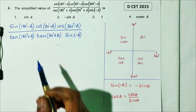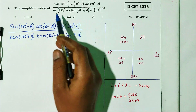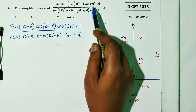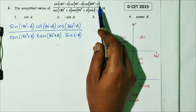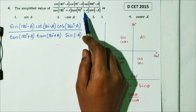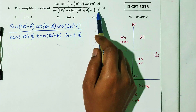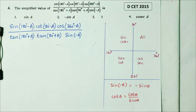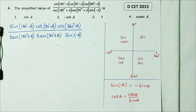Question 4: find the simplified value of sin(180−a) × cot(90−a) × cos(360−a), divided by tan(180+a) × tan(90+a) × sin(−a). This is from DCT 2015. We simplify each term using standard quadrant rules.